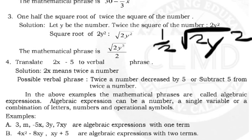Number 4: translate 2x − 5 to a verbal phrase. Here, 2x means twice a number, so a possible verbal phrase is 'twice a number decreased by five' or 'subtract five from twice a number.' From the examples above, mathematical phrases are called algebraic expressions. An algebraic expression can be a number, a single variable, or a combination of letters, numbers, and operational symbols.